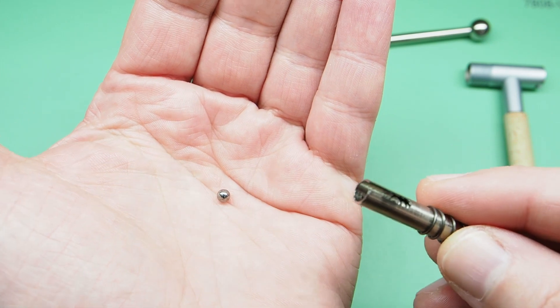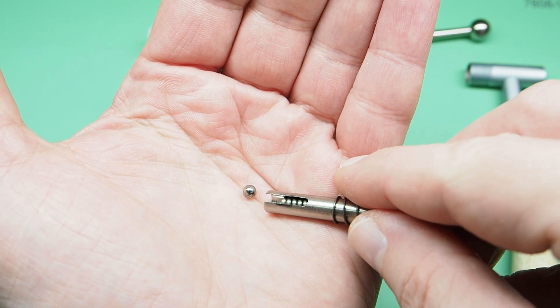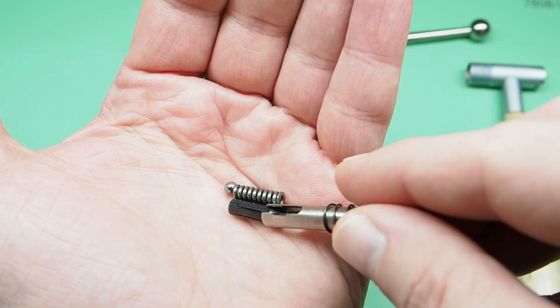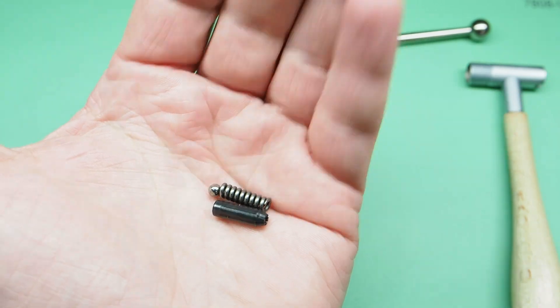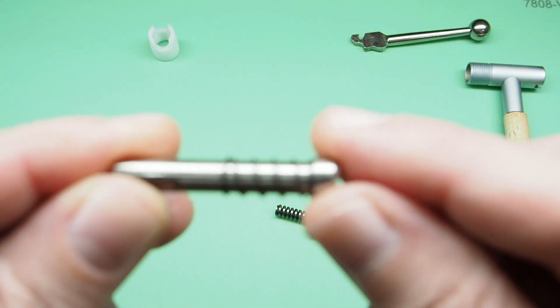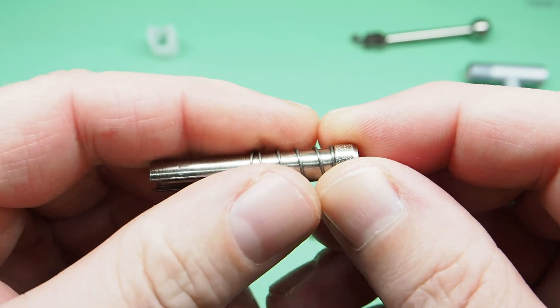This is the ball bearing. This is the spring. And this is the collet. There is also a spring here that can be removed.